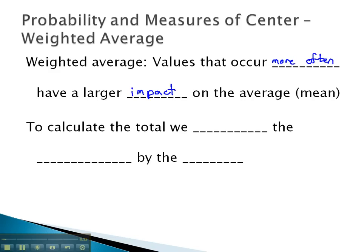So we must account for this when we calculate the total. To calculate the total, we must multiply the frequency of a value by the value itself.